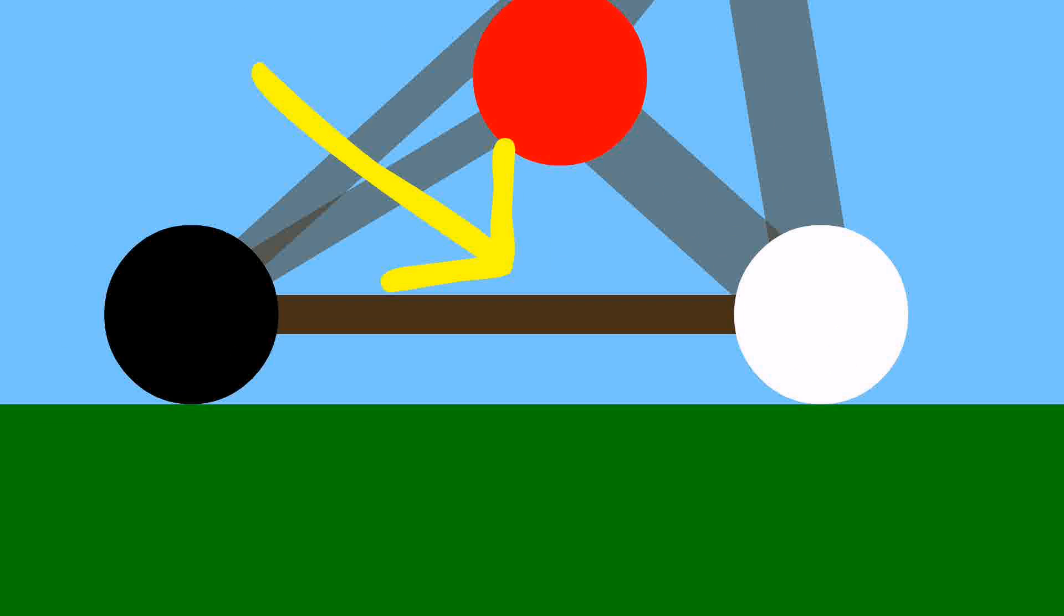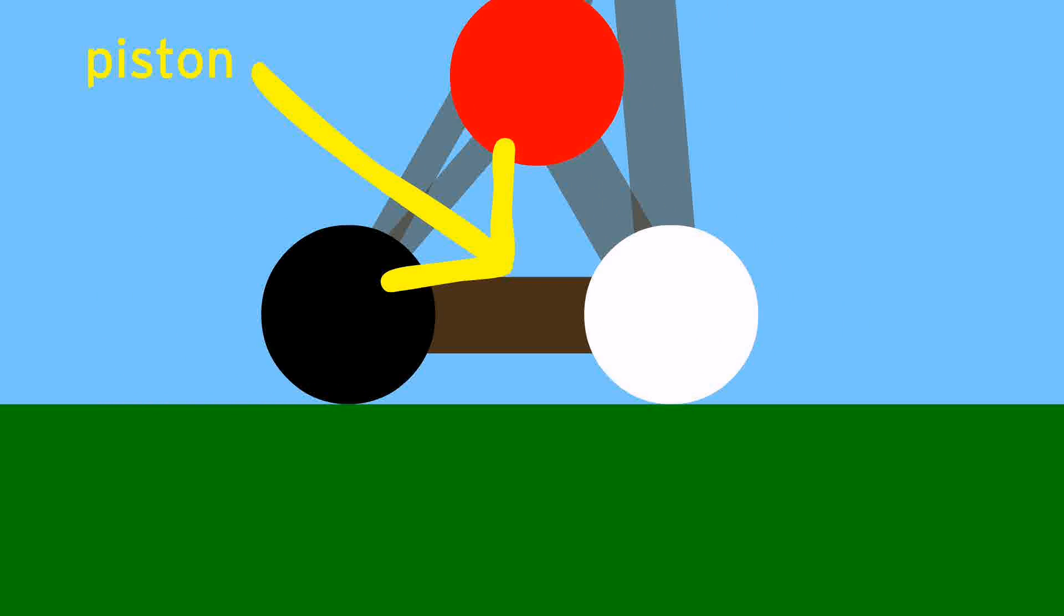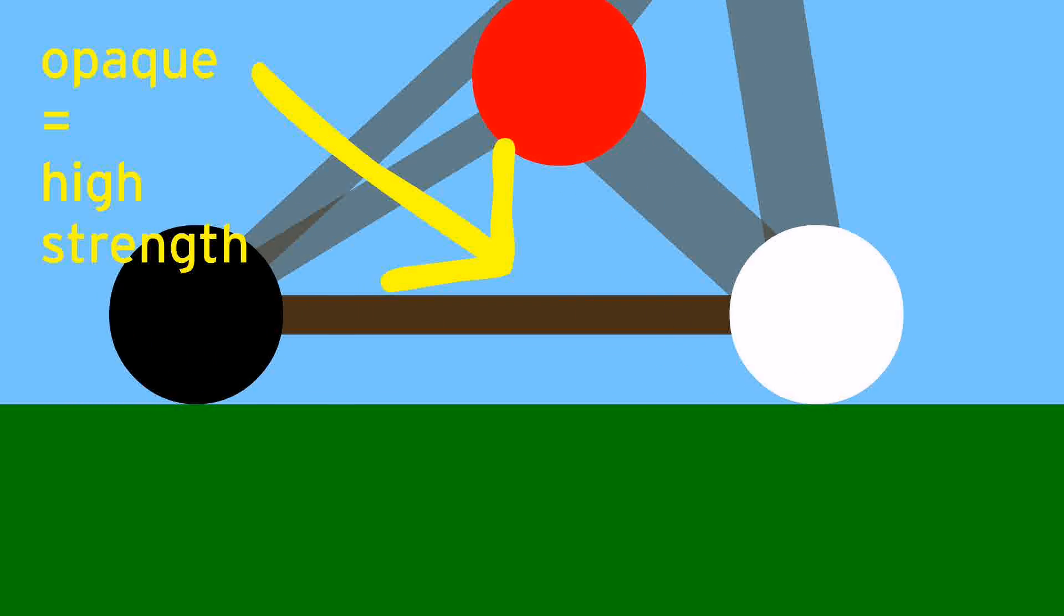So, how does this creature, the tetrahedron, work? Let's break down all the parts. This muscle is like a piston, contracting and expanding. Because it's the driving force pushing the whole creature along, it has to have very high strength.